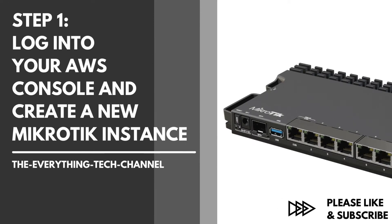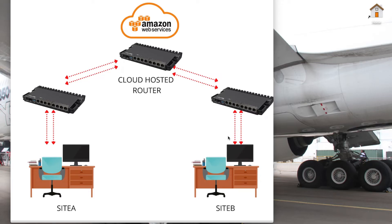Hi guys, today I'm going to be showing you how to deploy the MikroTik cloud hosted router on the Amazon Web Services cloud computing platform. I've got a diagram here that can help explain why you might want to do this. Site A and site B might want to communicate with each other — two separate office locations sharing information such as database files, documents, and applications.